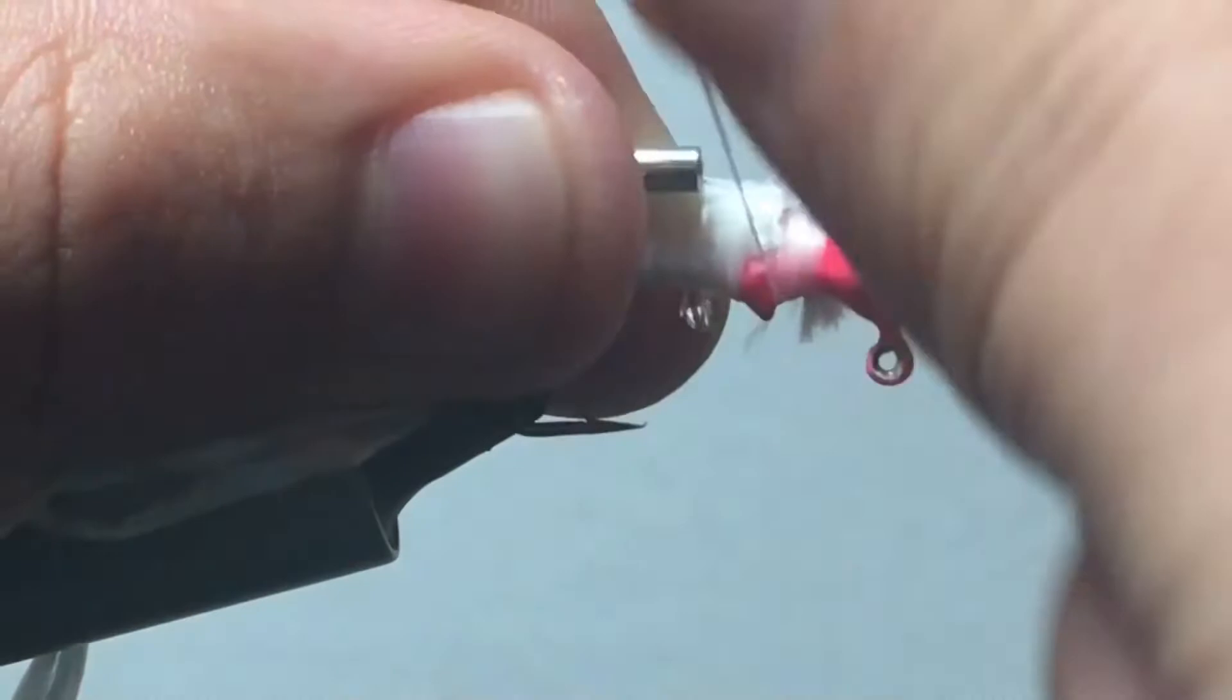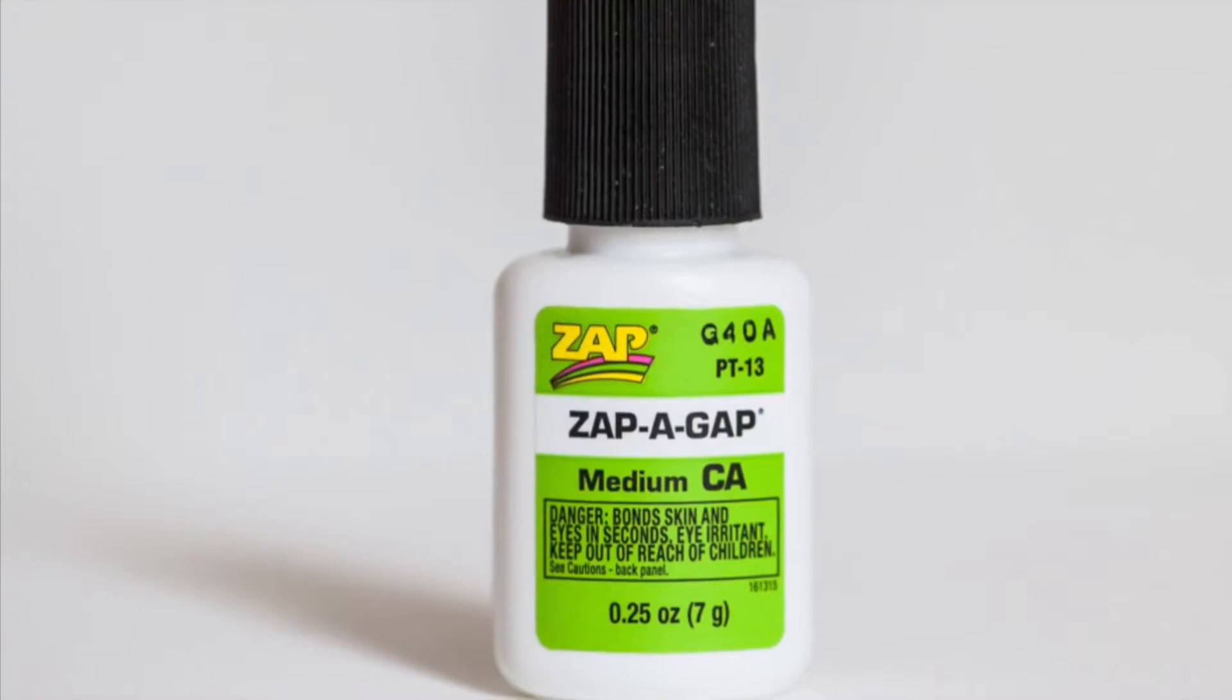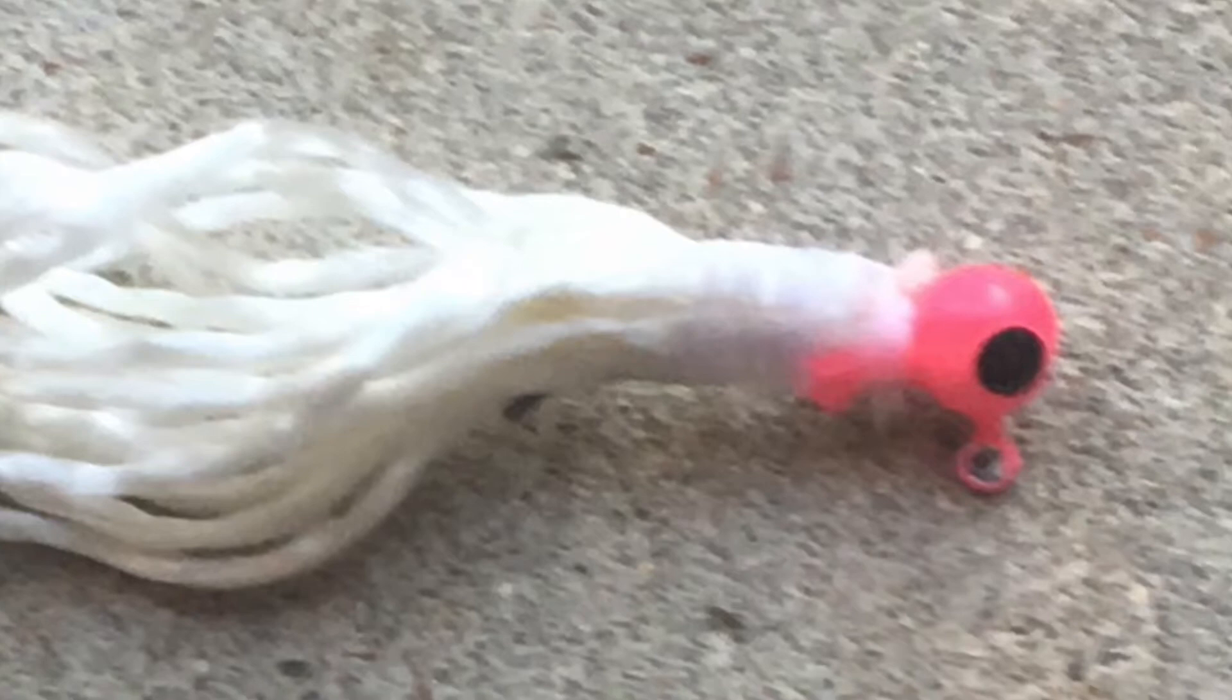The nylon rope should be staying in place and not spinning around the hook shank. When you're satisfied with how much rope you have on your lure, whip finish and apply head cement. For this video, I'm using Zappagap. When the glue is dried, clip off the barb and point of the hook at the bend. You don't have to clip off this part of the hook. You can choose to leave it on. I choose to clip it off because it seems while I'm fishing, it will cause the nylon rope to become a tangled mess.